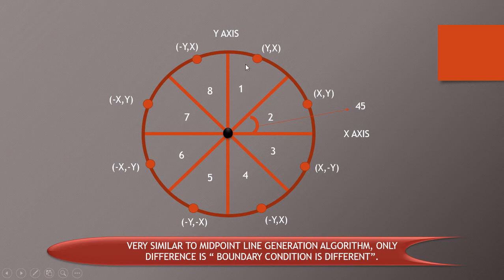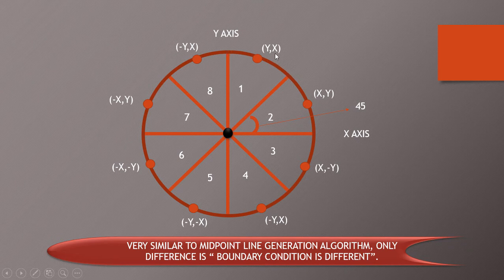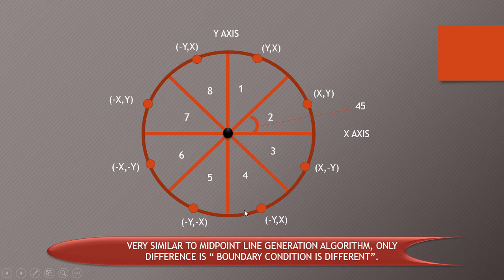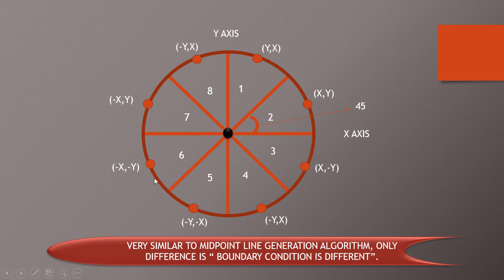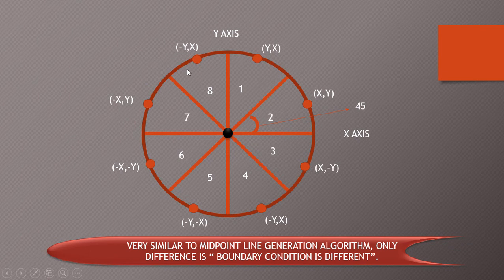On the basis of this, all the perimeter points which are present in these two octants are having both the positive values. In this one, all the pixels are having Y value negative and X value positive. In this octant we are having both the X and Y values negative. And in this one we are having X value negative and Y value positive.